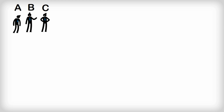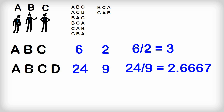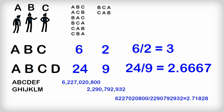Work out the number of ways you can arrange people in a line, then divide by the number of arrangements where no one is in their alphabetically correct place. As you get more and more people, the ratio of those two numbers approaches E. I've only really scratched the surface, but I hope you've enjoyed seeing how E is everywhere.